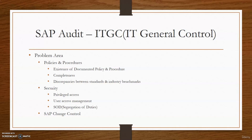We also need to address segregation of duties, limit and monitor privileged access to SAP infrastructure components, and check user access upon changes in responsibility. If a person is transferred from one department to another, their authorizations should be updated. If a person is leaving the organization, their ID should be disabled immediately. We need to validate user access against the segregation of duties matrix.